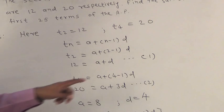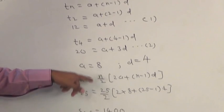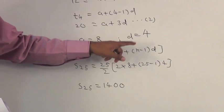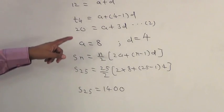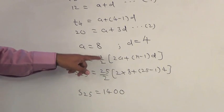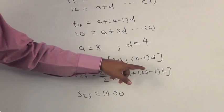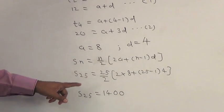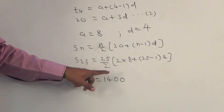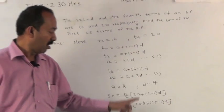We have to calculate the sum of first 25 terms. The formula is SN is equal to N by 2 in bracket 2A plus N minus 1 into D. Substituting the values in this formula, we get S25 is equal to 25 upon 2 in bracket 2 into 8 plus 25 minus 1 into 4. S25 is equal to 1400. The sum of the first 25 terms of an AP is 1400.